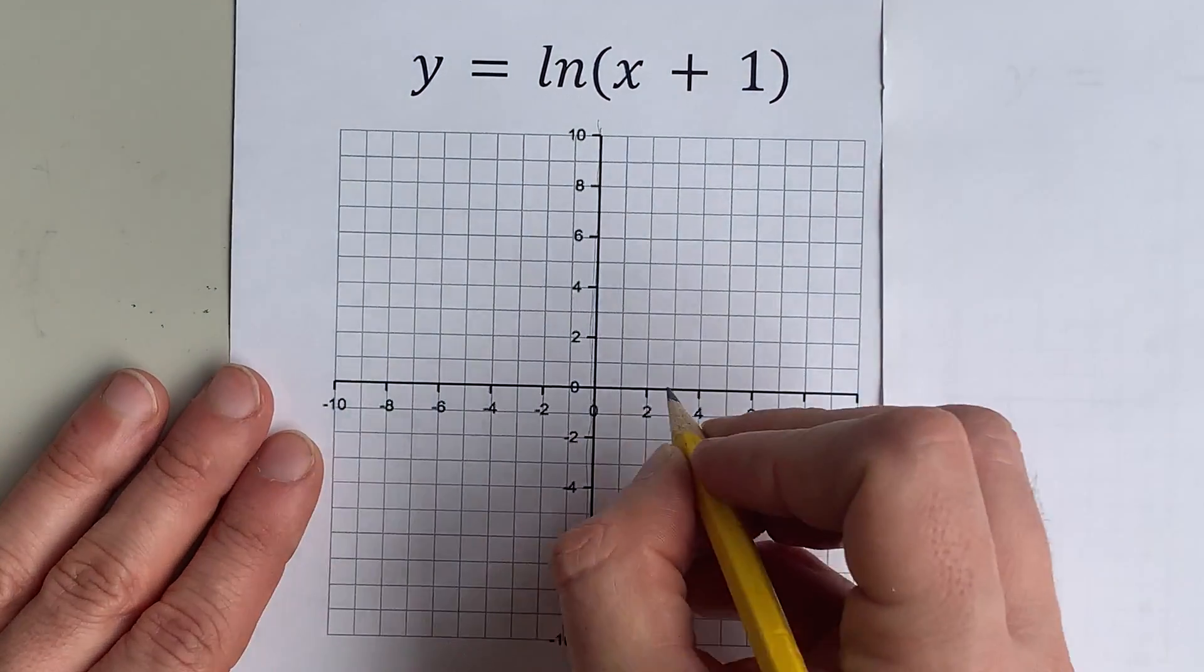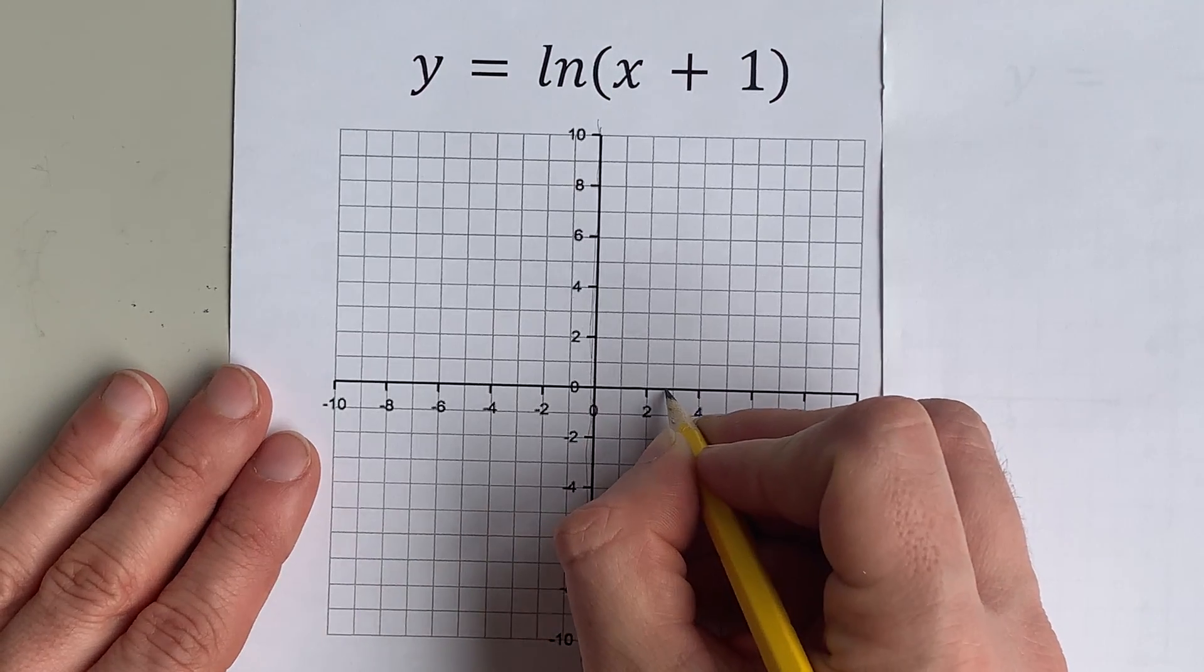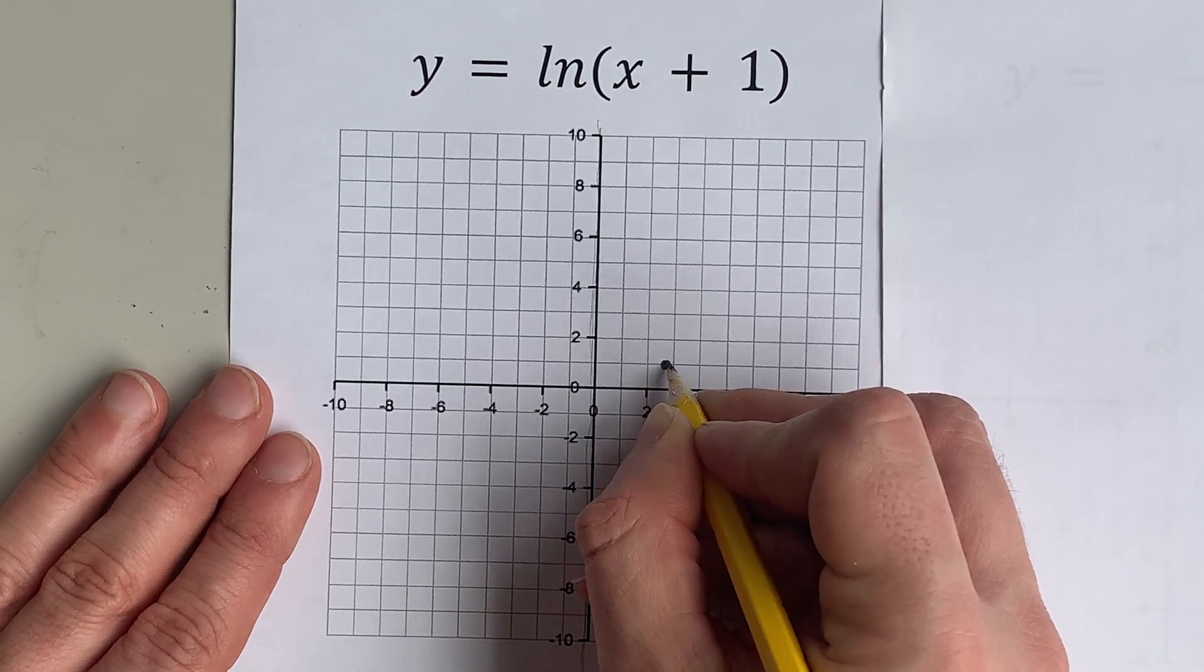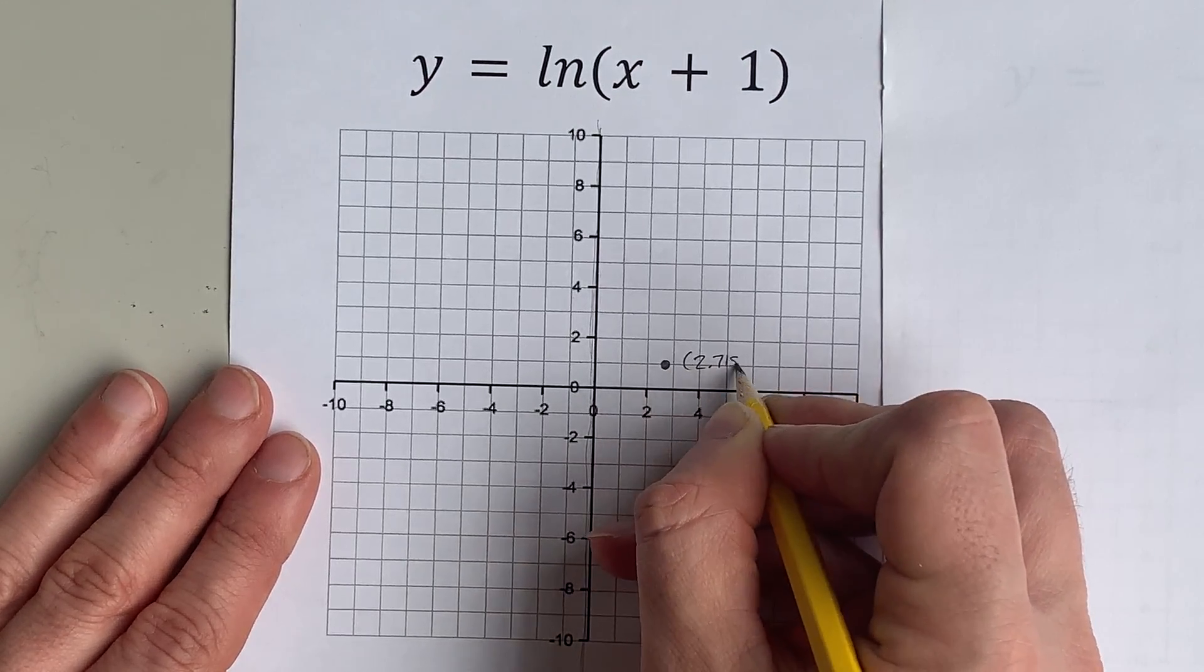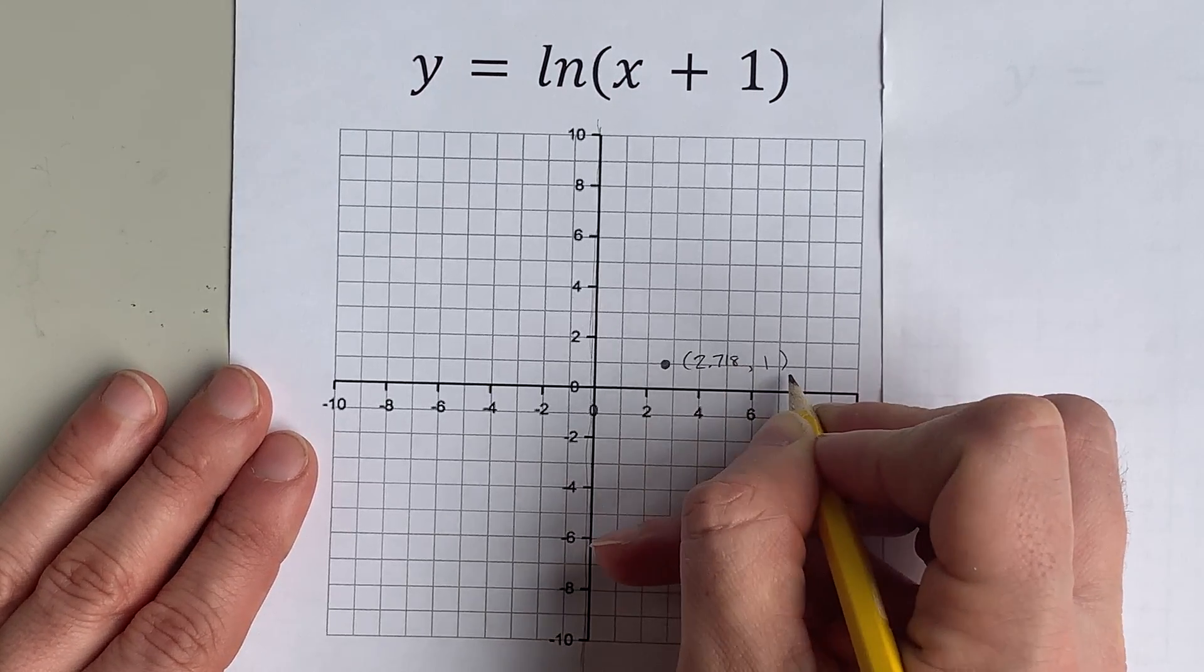Now if you take the ln of 2.71, or e, you are supposed to get 1. So that point there is 2.71828, whatever the constant e is, comma 1.